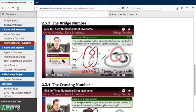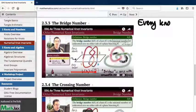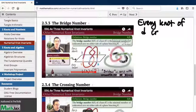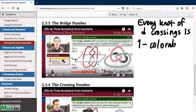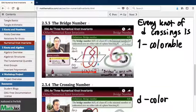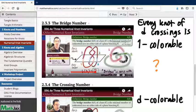So far, we're at a place where we know every knot is one colorable. Every knot of d crossings is for sure one colorable - just color everything the same color. And we also know every knot of d crossings is going to be d colorable. Just give every arc its own separate color. And the question is, what about the in-between? Is it possible for a knot to be k colorable, where k is in between 1 and d?